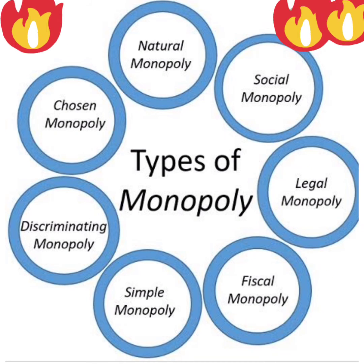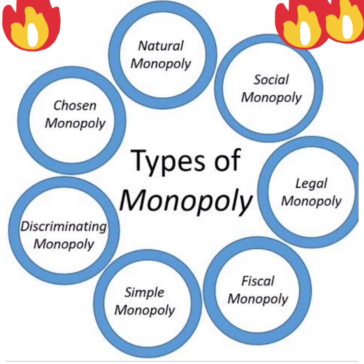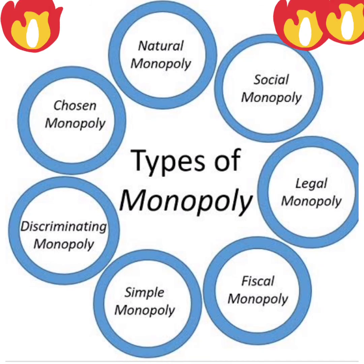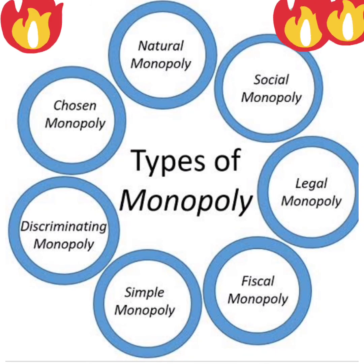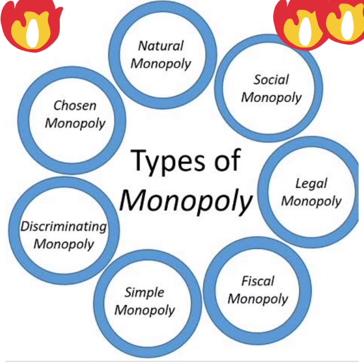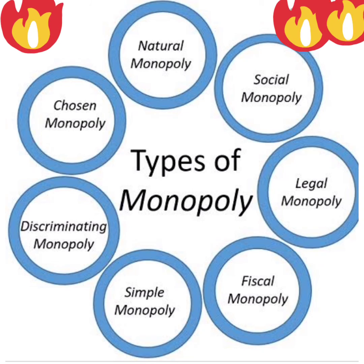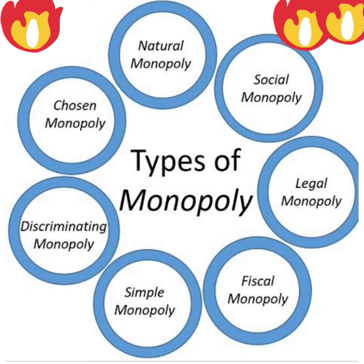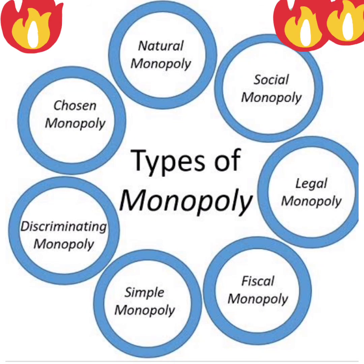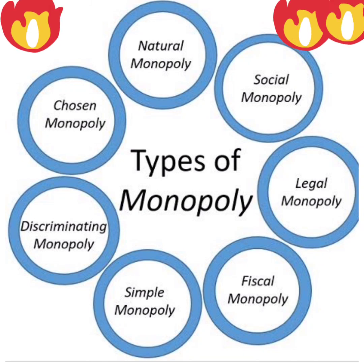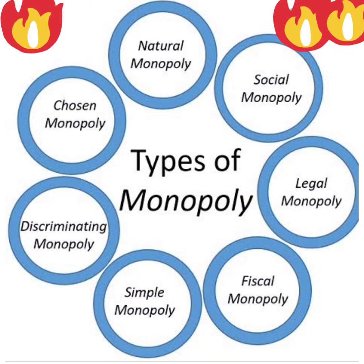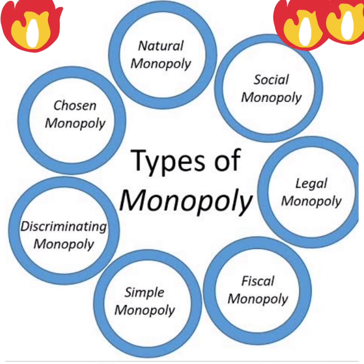Coming to the features of monopoly: there is one firm to produce. Whether a sole proprietor or a partnership, that entity has total control. Unlike perfect competition, which has free entry and exit, monopoly has no such permissions — entry is quite prohibited so that the monopolist can control the entire market.